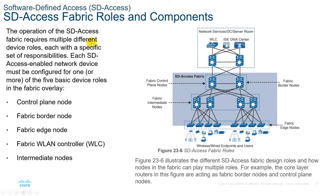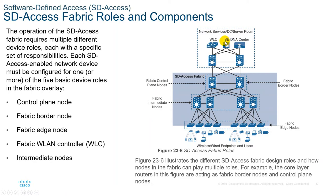The operation of the SD-Access fabric requires multiple different device roles, each with a specific set of responsibilities. Each SD-Access-enabled network device must be configured for one or more of five basic device roles in the fabric overlay: the Control Plane Node, the Fabric Border Node, the Fabric Edge Node, the Fabric Wireless LAN Controller, and the Intermediate Node. The architecture also includes Cisco DNA Center and Cisco ISE at the top.